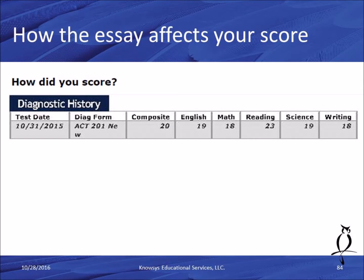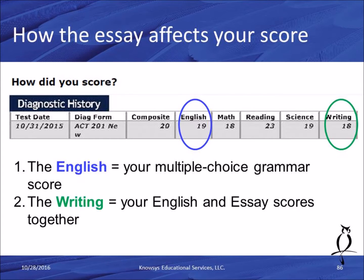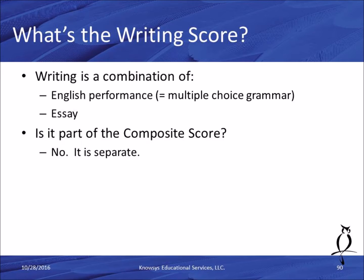Now let's return to page one and talk about how the essay affects your overall ACT score. English equals your multiple choice grammar score. Writing is your English score and essay scores combined. On both, the range is one to 36. The sample student here is below the average of 21 in each section. The writing score is a combination of your English performance on the multiple choice grammar and your essay. But the essay does not count as part of your composite score — it's completely separate. The composite is the average of English, math, reading, and science only.